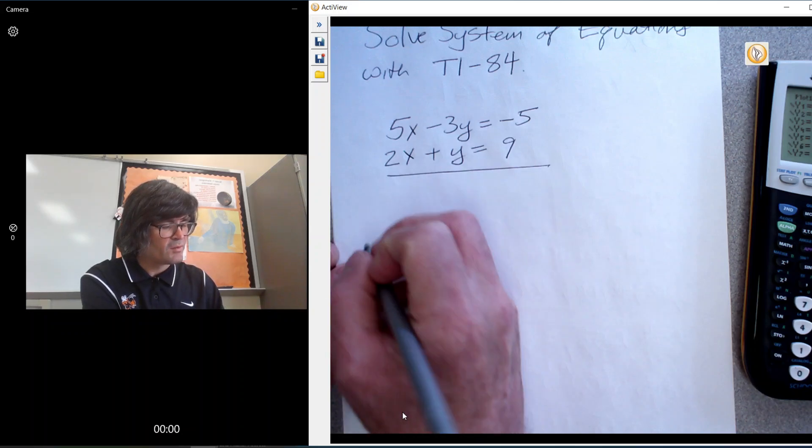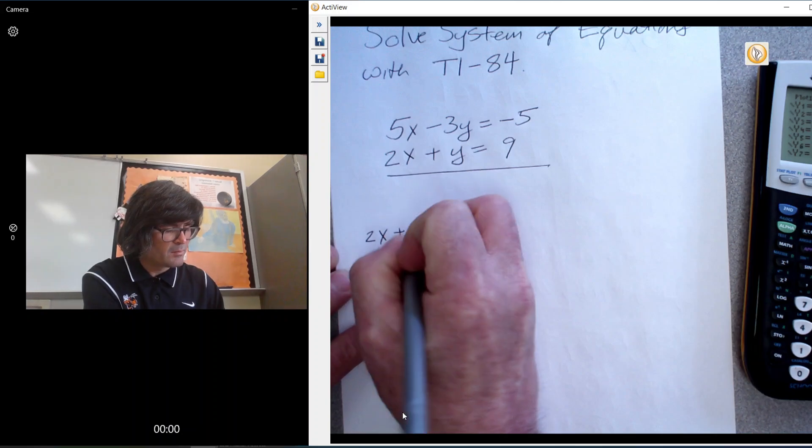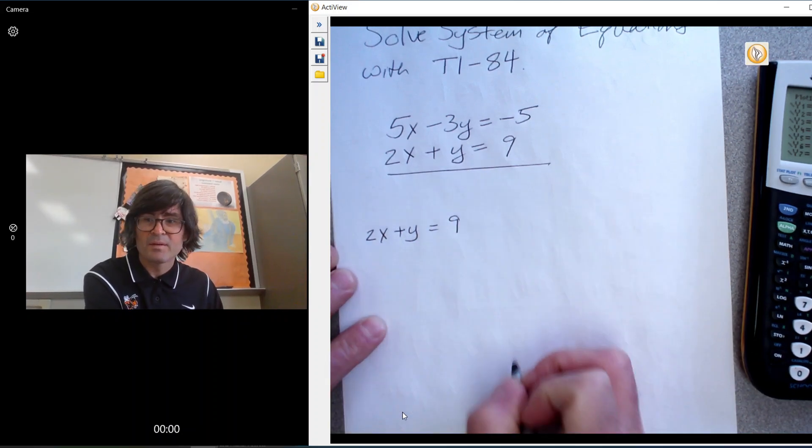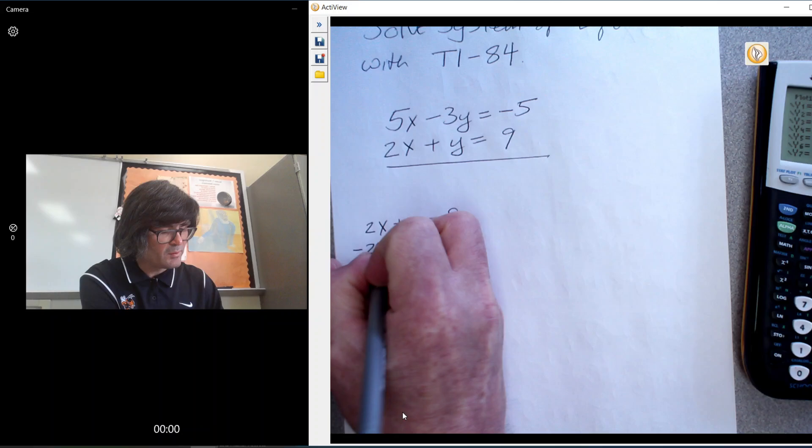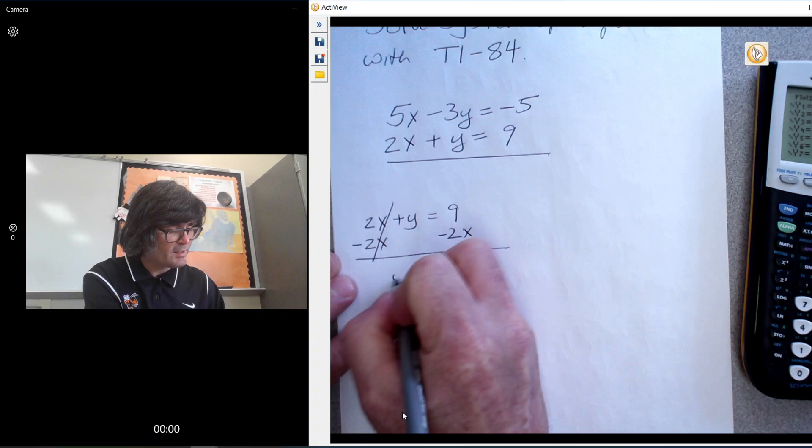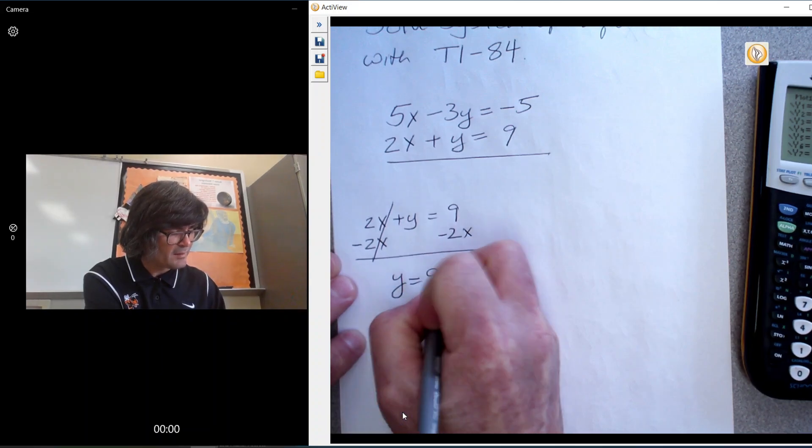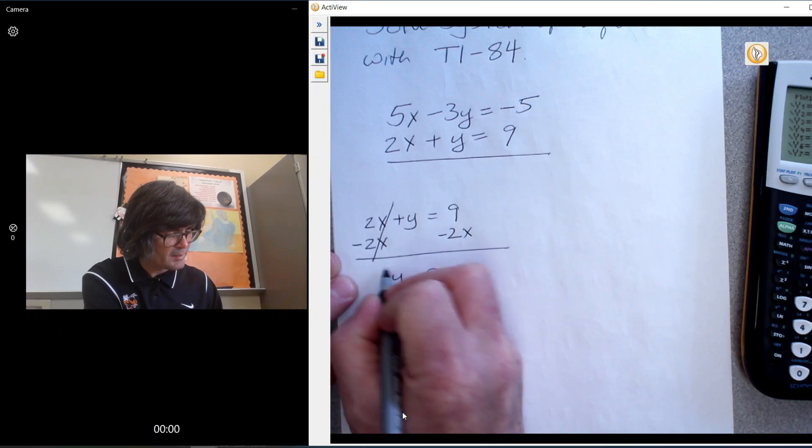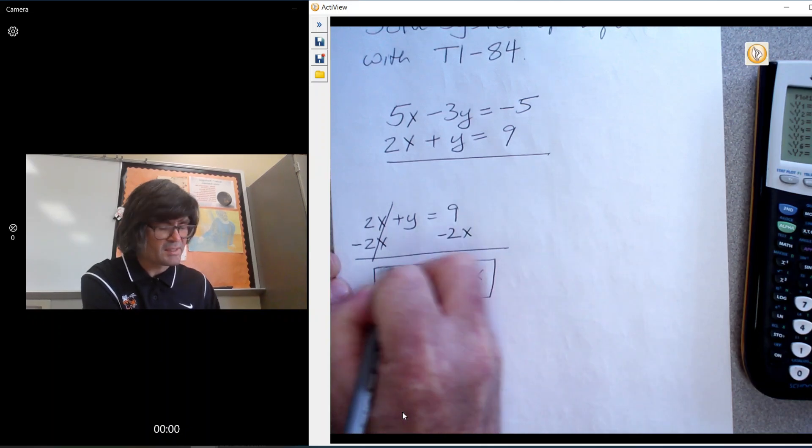For this, we'll start with 2x plus y equals 9. To get the y by itself, I want to do minus 2x on both sides and cancel out the 2x. You get y equals 9 minus 2x. That's equation 1.